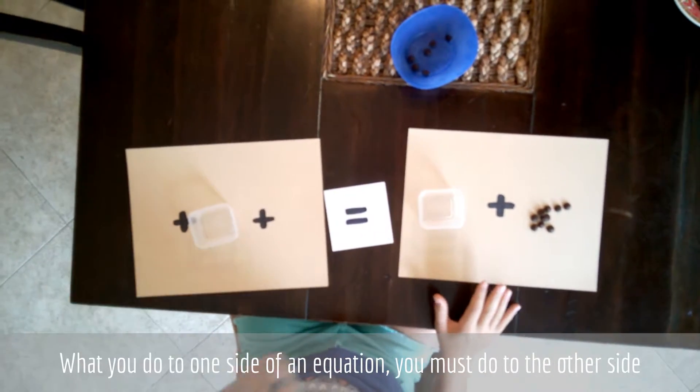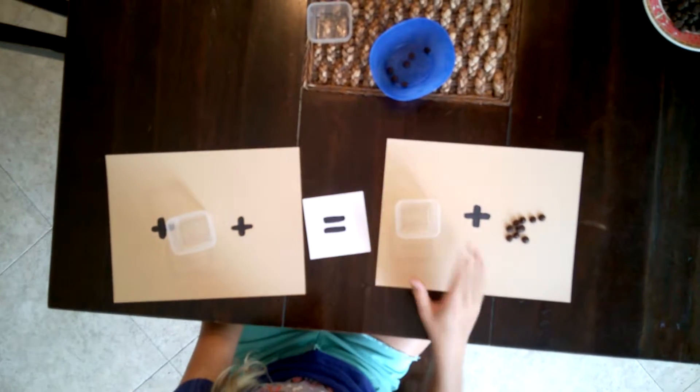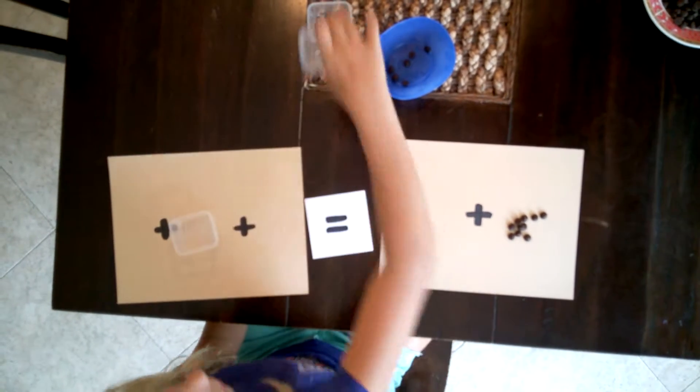Alright, so now we can take away 1 more cup. What we do on one side of the equation, we have to do to the other side. We can take away another cup.